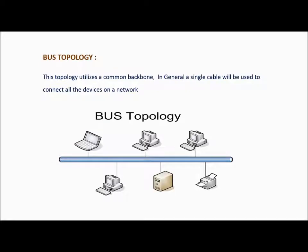Bus topology is the topology which makes use of a backbone — in general, a cable wire. As seen in the diagram, all the devices in the network make use of a single cable to communicate with each other. The main disadvantage of this topology is if the backbone goes down, the entire network goes down.